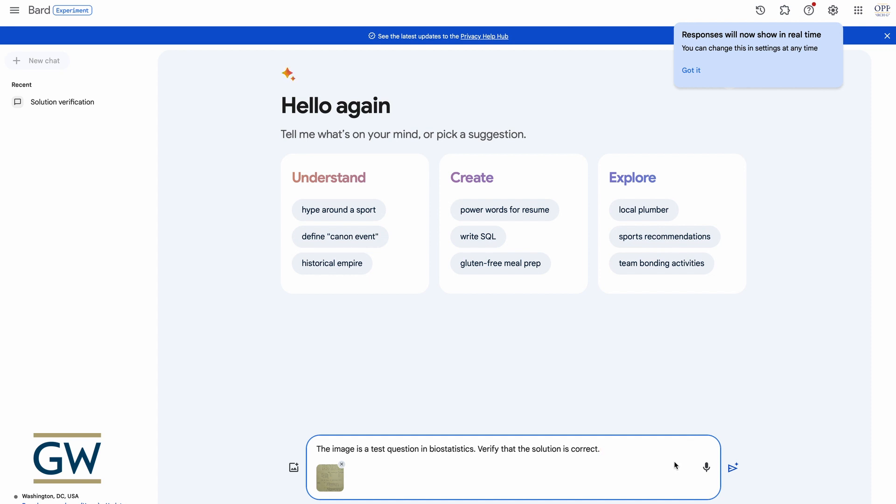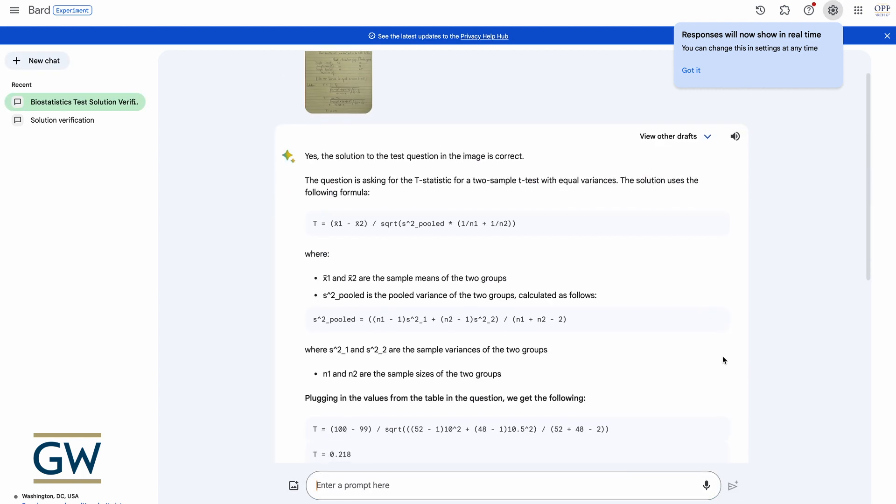All I'm going to do now is just write a prompt. So there's my prompt. I've just written: the image is a test question in biostatistics. Verify that the solution is correct. Now let's hit the submit button.